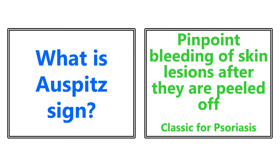What is Auspitz sign? This is a classic board question — I have seen this many, many times. It is pinpoint bleeding of skin lesions after they are peeled off, and this is classic for psoriasis. They may even show you a picture of a psoriatic lesion that's peeled off, and it's called Auspitz sign.